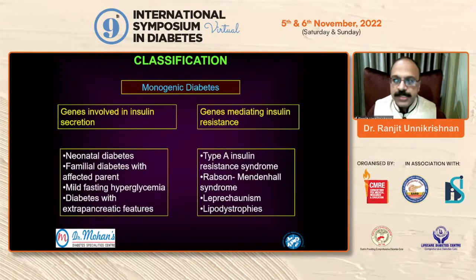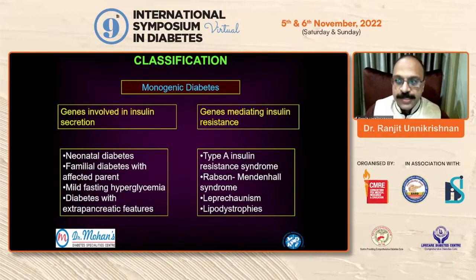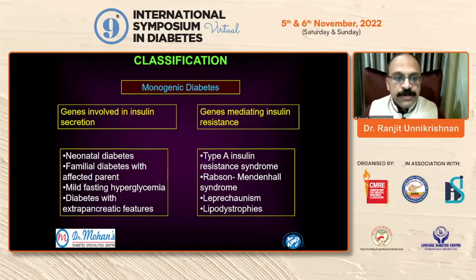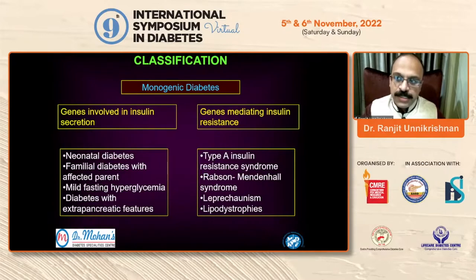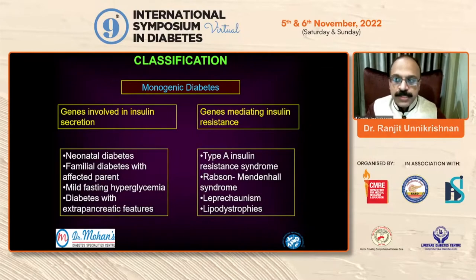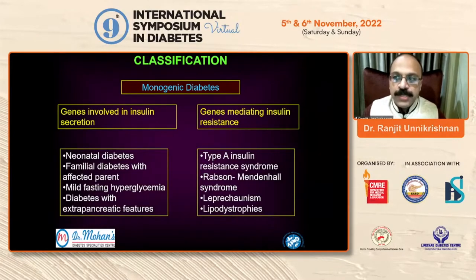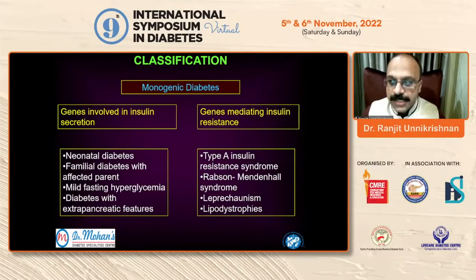How do you classify monogenic diabetes? The two main pathophysiologies of diabetes are insulin secretory defect and insulin resistance. We can have monogenic diabetes due to defects in genes involved in either insulin secretion or insulin action. Monogenic diabetes due to insulin resistance is extremely rare and generally does not present too much diagnostic dilemma, as various extra-pancreatic features ease the diagnosis. I will concentrate over the next 20 minutes on monogenic diabetes due to beta cell secretory defect.